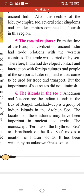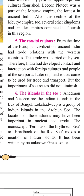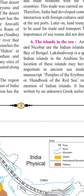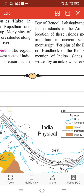The location of these islands was important in ancient trade. The manuscript 'Periplus of the Erythraean Sea,' also known as the Handbook of the Red Sea, makes mention of Indian islands. It was written by unknown Greek sailors who visited India and wrote books about it. Both these books mention the two island groups found in our country.